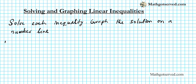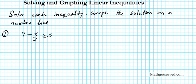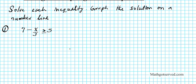Let's start with question number 1. We have the inequality 7 minus x over 3 is greater than or equal to 5. We're going to try and get x by itself. When you're solving linear inequalities it's just as though you're solving an equation. The only difference is that whenever you divide by a negative, the inequality symbol flips in direction. That's the only difference from an equation.